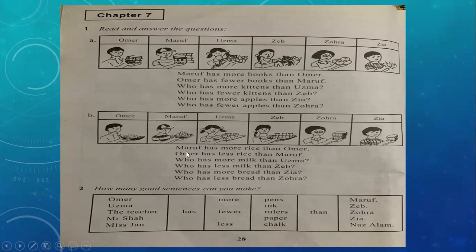Now again, looking at the names of the girls and boys: Maruf has more rice than Umar, using the word 'more'. Umar has less rice than Maruf. In Umar's plate there is less and in Maruf's plate there is more rice. Who has more milk than Uzma? Zeb has more milk. Who has less milk than Zeb? Uzma has less milk. Who has more bread than Zohra? Who has less bread than Zohra? These words — more, fewer, less — keep them in mind.